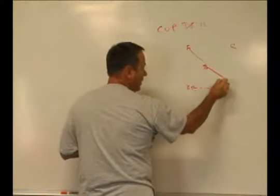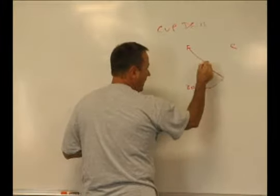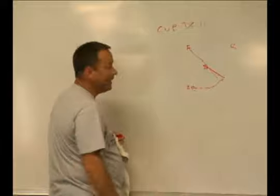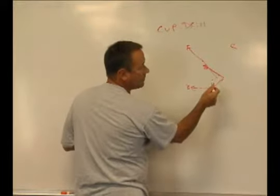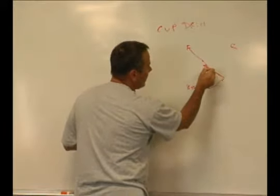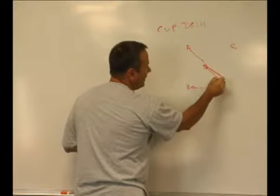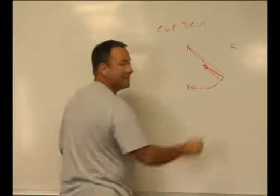So if the strong safety is cutting him off and there's cut back alley here, that's where he's going to fit. If the strong safety is going to fill on the inside, then the free is going to fill over the top.